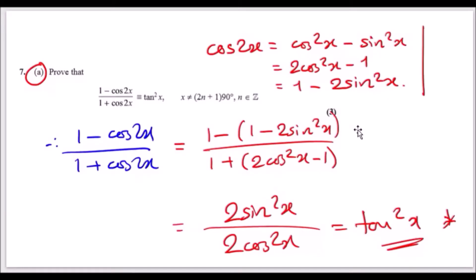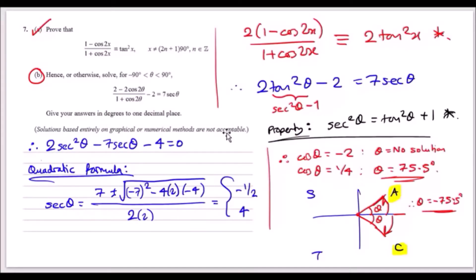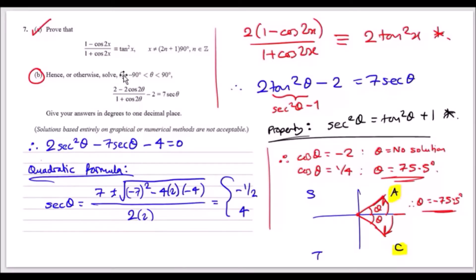The tip is: always try to work backwards and find the meeting point. For part b, solve the equation in degrees between minus 90 and 90. The equation looks just like the first one except the expression is doubled. I factored 2 out, recognized 2tan²x, and replaced the expression with 2tan²x. Then, using the identity tan²x equals sec²θ minus 1, I substituted and rewrote in terms of sec.